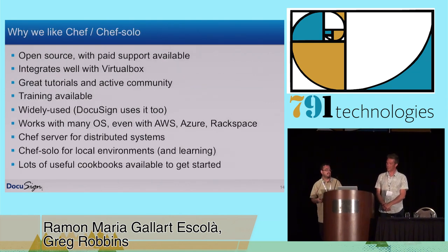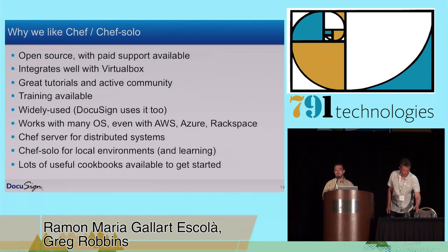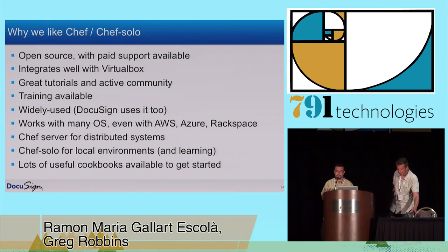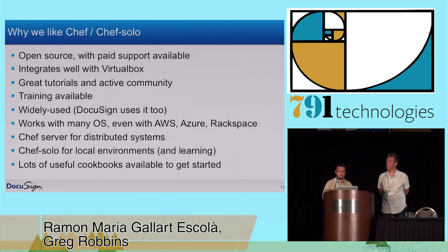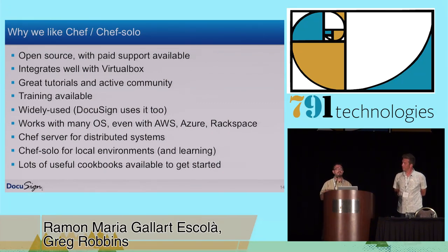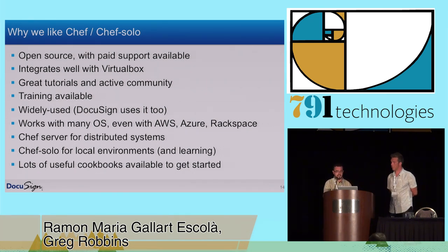So why do we like Chef and Chef Solo? Mainly for the same reasons we like Vagrant — because it's open source. As a big company, there are some things we may need support for, and paid support is available for Chef, so that's cool. It integrates very well with VirtualBox, it's very widely used, it works with lots of operating systems, and you can have a lot of ready-made cookbooks in order to get started. And Chef Solo is great for local environments — you can start learning right after downloading that component.